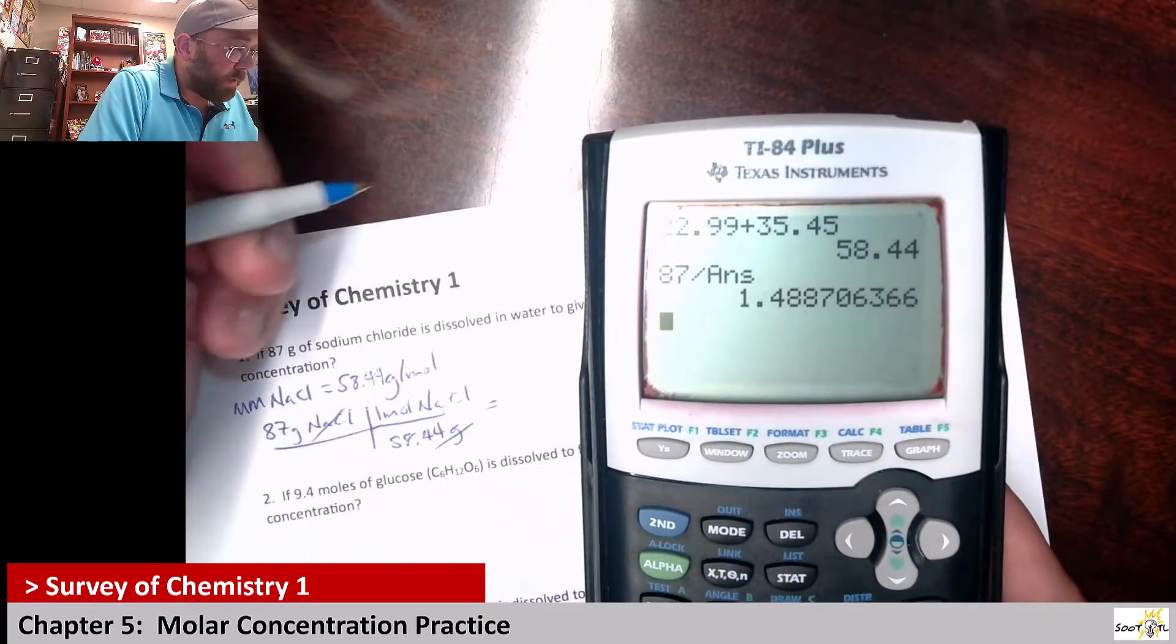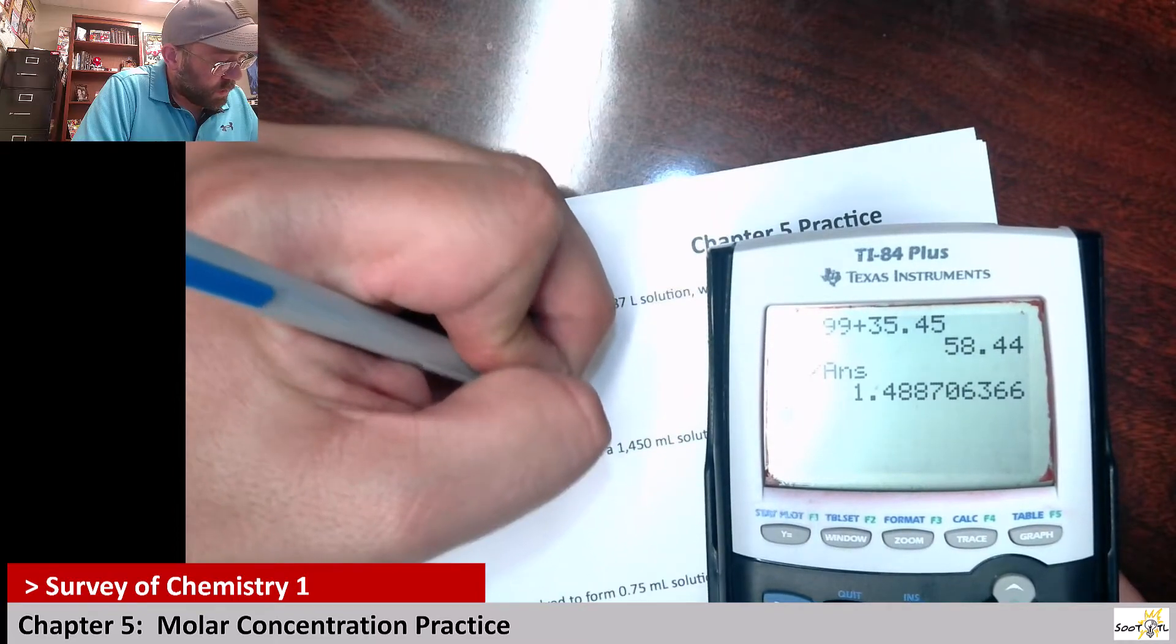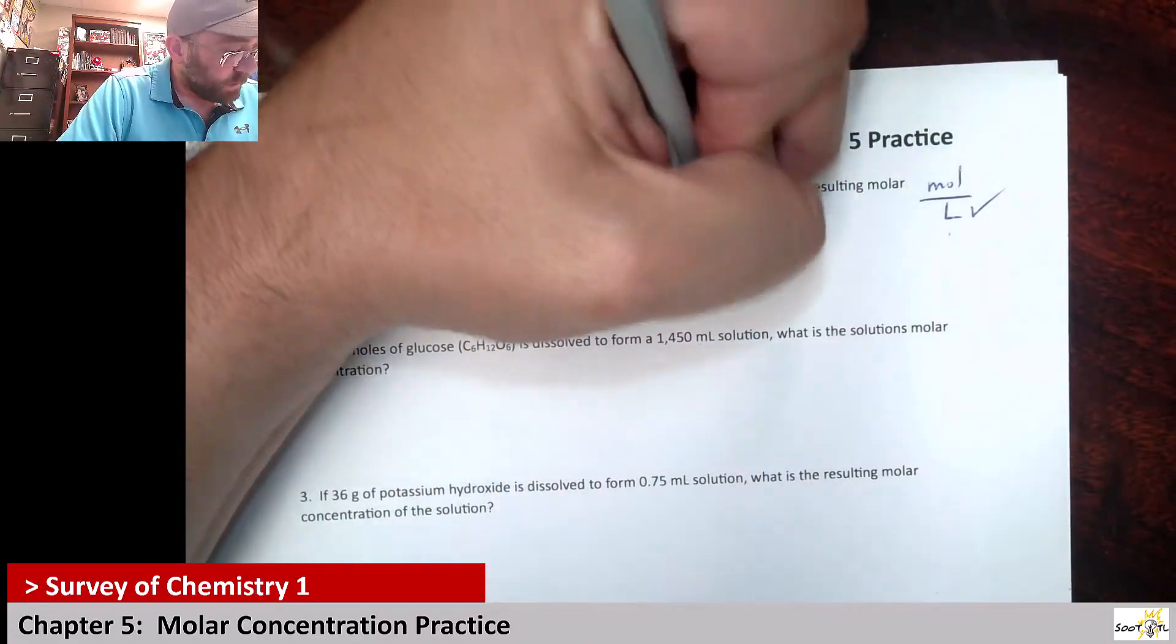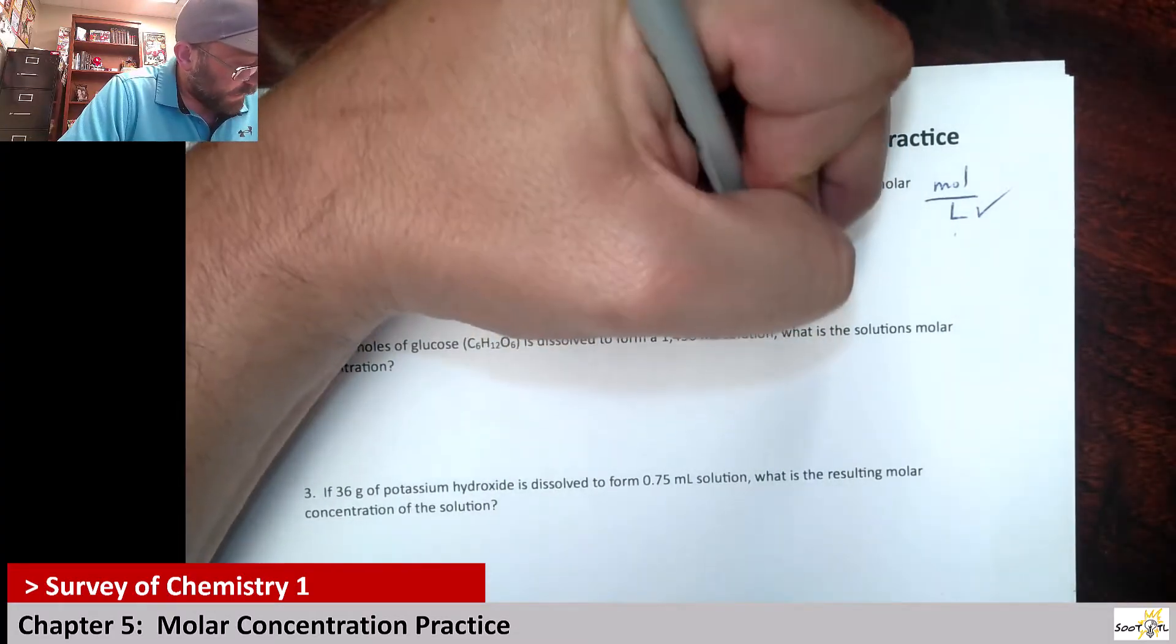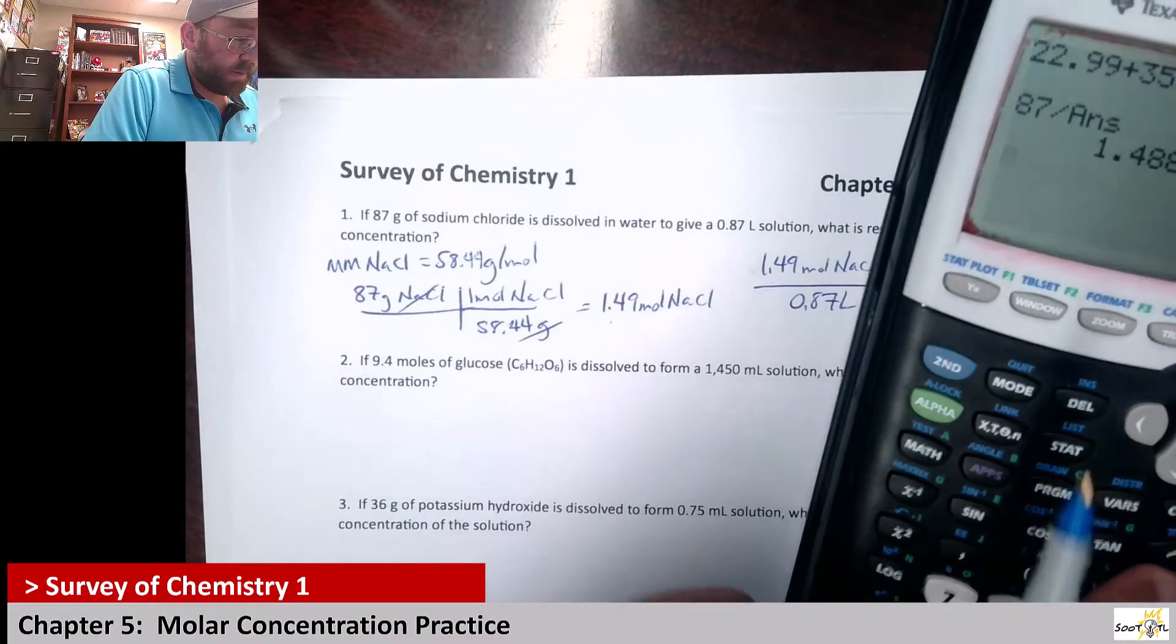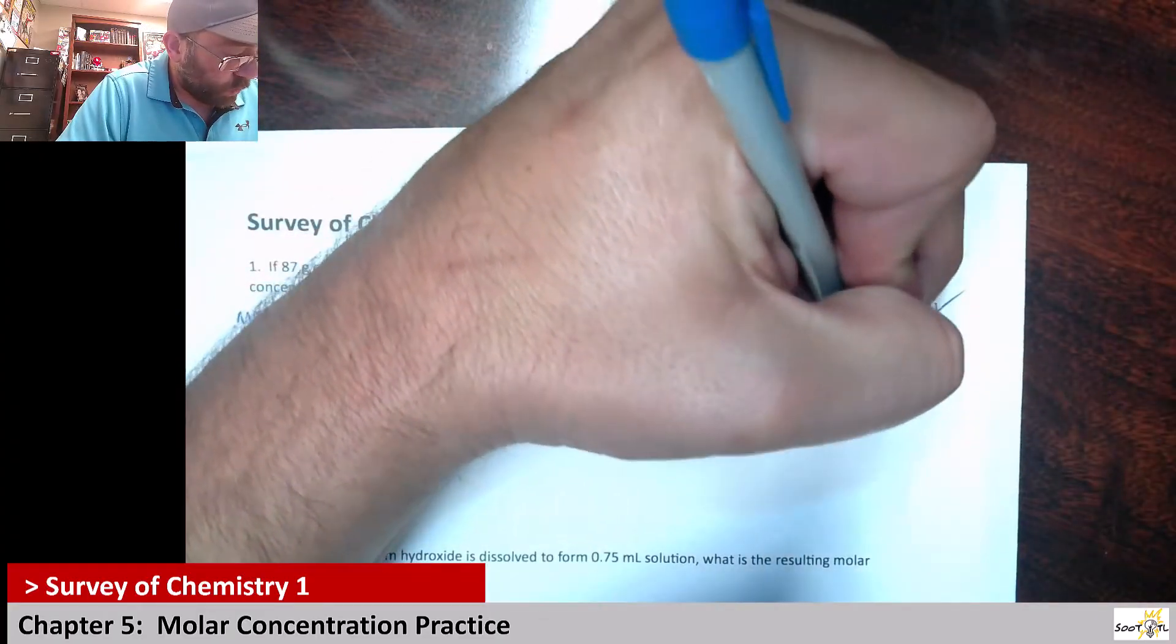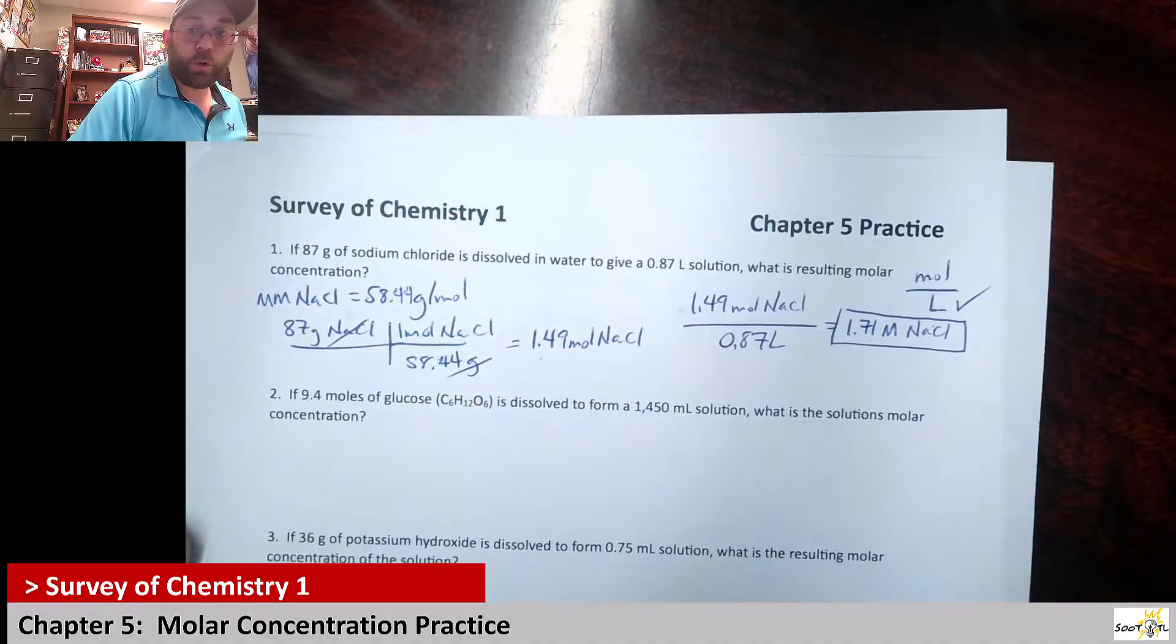So that means I'm just taking the 87 and dividing it by the 58.44. What does that give me? 1.49. And so then to get the molar concentration, I need to take the mole amount divided by the liter amount. So I'm saying 1.49 moles of sodium chloride divided by 0.87 liters. That gives me 1.71. So that's 1.71 molar NaCl. That would be our answer, our molar concentration.